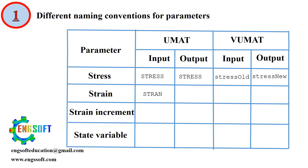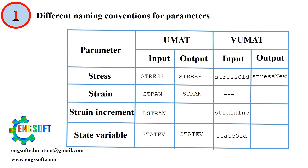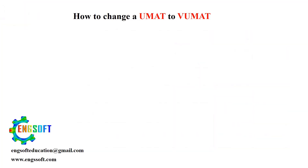The strain tensor in U-MAT is called stran, but this array doesn't exist in VU-MAT. The strain increment in U-MAT is dstran, while in VU-MAT it's referred to as stran_inc. In U-MAT, state variables are named statev — both input and output — but in VU-MAT they are split into state_old (input) and state_new (output).